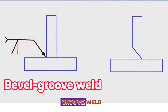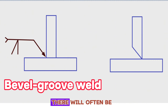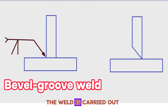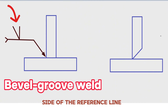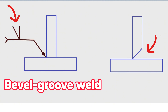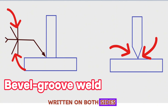Bevel groove welds. A bevel groove weld has a bevel cut into only one side of the joint. The arrow of the welding symbol will point to the side of the joint that needs the bevel. There will often be an angle above the weld symbol telling you the angle at which to cut the bevel. The groove welding symbol above or below the reference line represents the location of the weld: below means the near side (arrow side), above means the far side. Drawings may call for welds on both sides of the reference line.